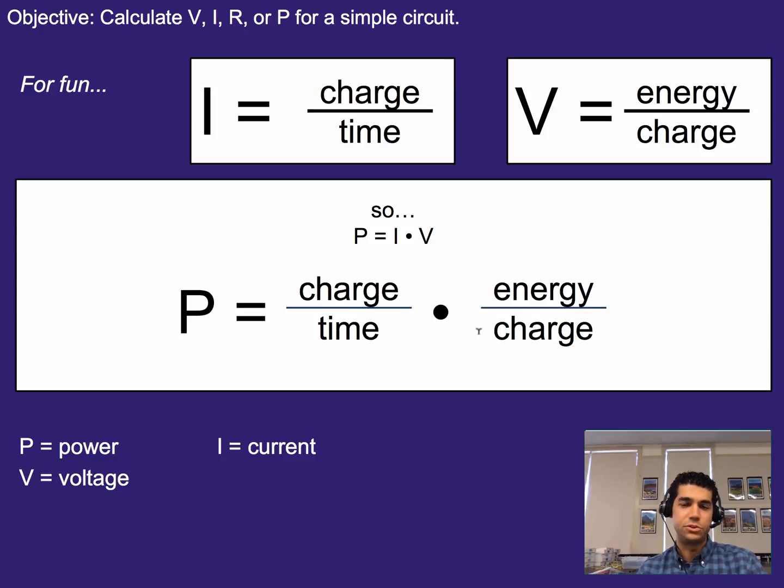Well, we can do some cancellation or simplification here, and realize that really what this is doing is, now that we know how much energy each charge is bringing, and we know how many charges are coming through each second, what we really are figuring out is how much energy is coming through each second. And so that's why power is equal to current times voltage.